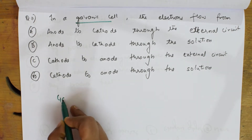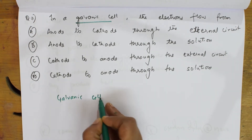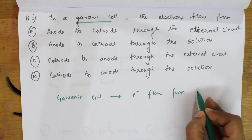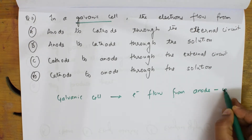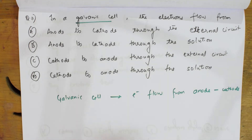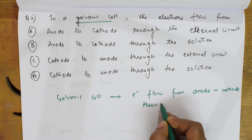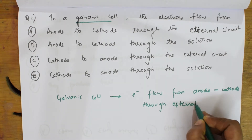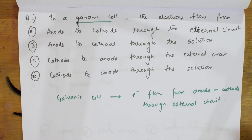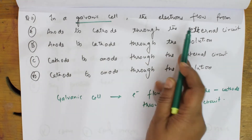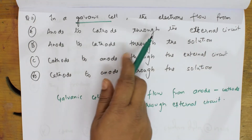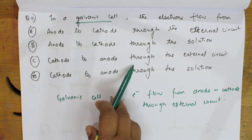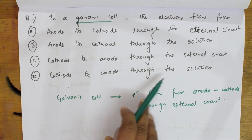Remember. In a galvanic cell, always electrons flow from anode to cathode. In a galvanic cell, electrons flow from anode to cathode through the external circuit. This is important. Let us look at the options: anode to cathode through external circuit — yes. Anode to cathode through solution — this is wrong. Cathode to anode through solution — wrong.